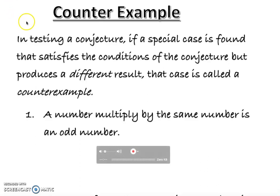Okay, this video I'm going to talk about counter examples. In testing a conjecture, if a special case is found that satisfies the condition of the conjecture but produces a different result, that case is called a counter example.